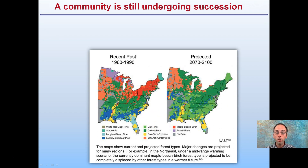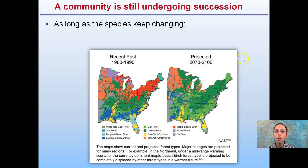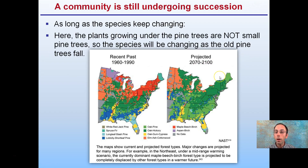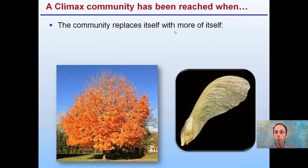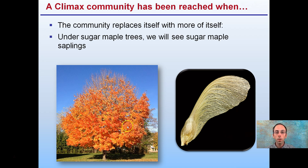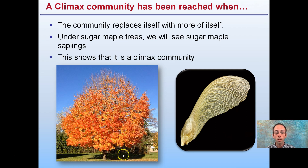This map shows the current projected forest types, with major changes projected for many regions. Maple, beech, and birch trees are projected to become less predominant by 2100. As long as species keep changing — for instance, plants grown under pine trees are not small pine trees — succession continues. A climax community has been reached when the community replaces itself with more of itself. Under sugar maple trees, we will see more sugar maple tree saplings, indicating the climax community, because the original specimen is being replaced by the same type rather than different species that would further change the community.